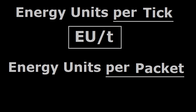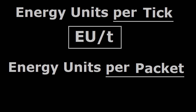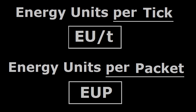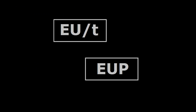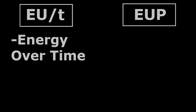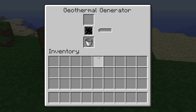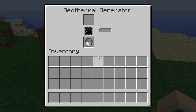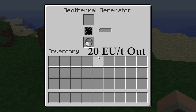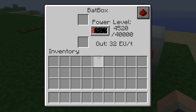You've probably seen them written as EU/t and EUP respectively. They're not the same — they're actually two different types of measurement. Energy units per tick measures the energy produced or consumed over time. For example, this geothermal generator is producing energy at a rate of 20 energy units per tick, and that also means that the bat box beside it is receiving energy at a rate of 20 units per tick as well.